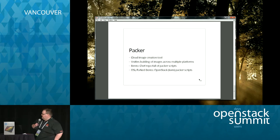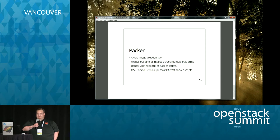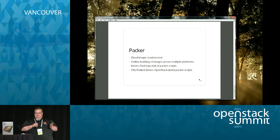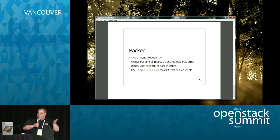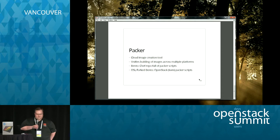The last thing I want to talk about is Packer, a cloud image creation tool. It was created by the same guy who created Vagrant. Working with many different platforms at the OpenSource Lab, I don't want to deal with five different tools to create an image. Packer lets me make an image for Vagrant, for OpenStack, for any platform. Chef has a repository called Bento that has all the various Packer scripts they use.